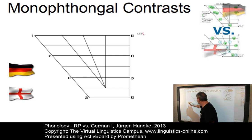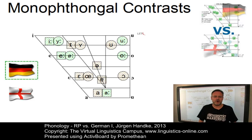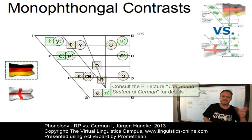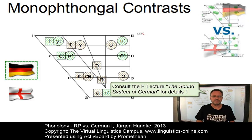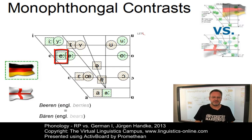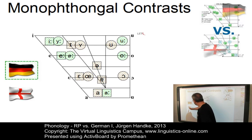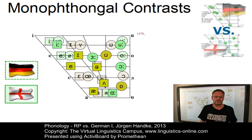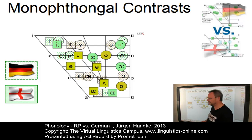Here is the German system of monophthongs. In the e-lecture on the sound system of German, we define 16 monophthongs in Standard German, presupposing a merger of the two front vowels E and E, so words like 'berries' and 'bears' are homophones — they would both be pronounced as 'Beeren'. If we now add the system of RP monophthongs, you immediately see that their qualities are by and large different from the qualities of the German monophthongs.